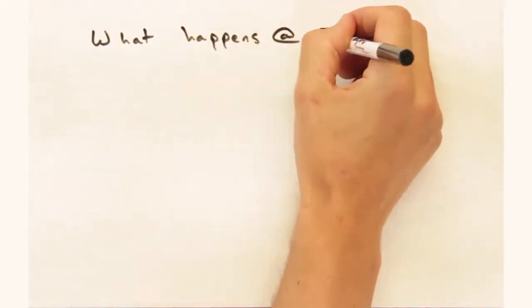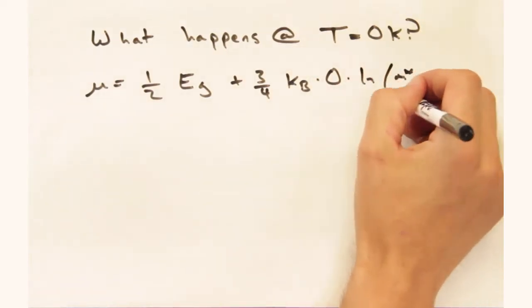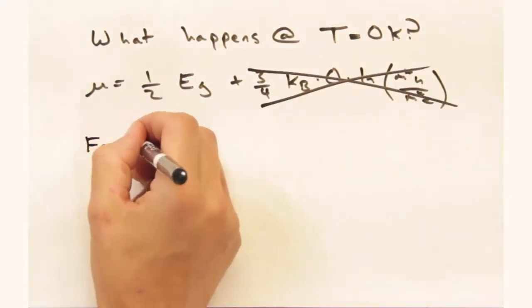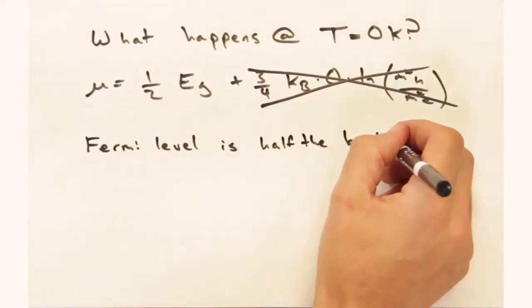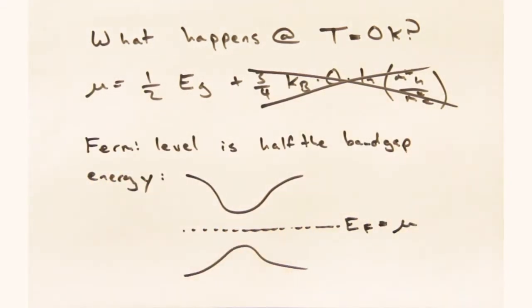Let's see if we can rationalize the behavior predicted by this expression. Nicole, what happens at zero Kelvin? Well, the second term disappears altogether, leaving the Fermi level halfway in the gap. And here we're invoking the Fermi level and the chemical potential are effectively the same term.